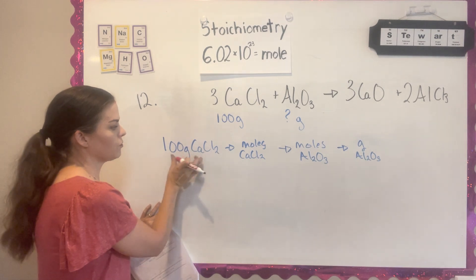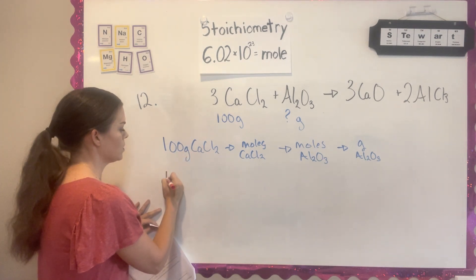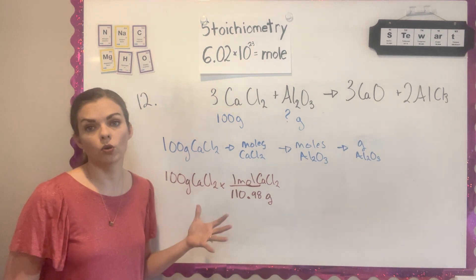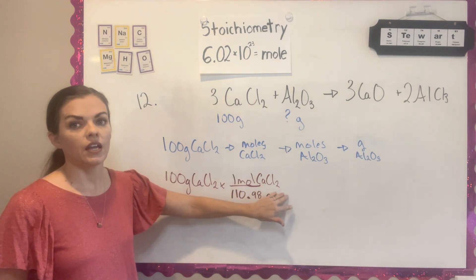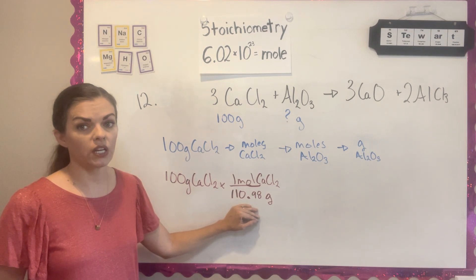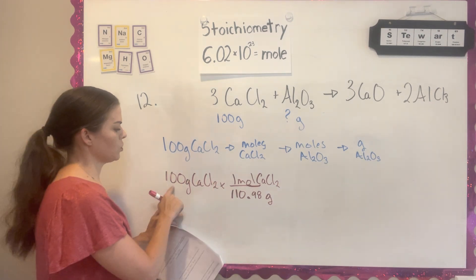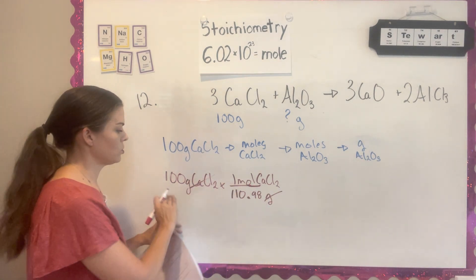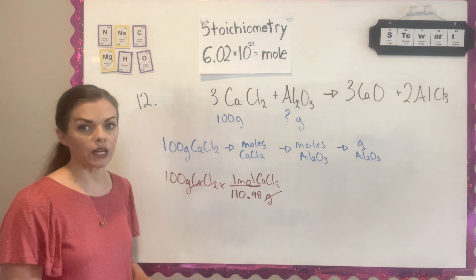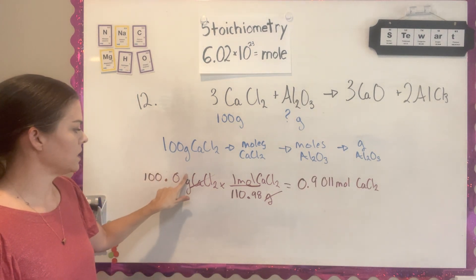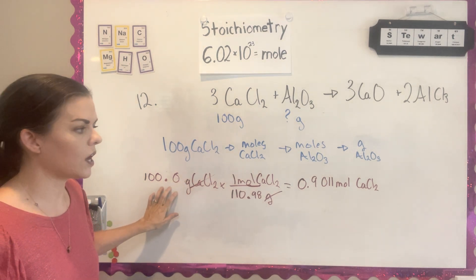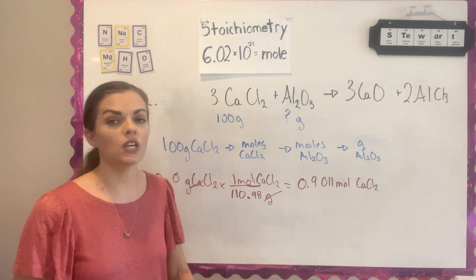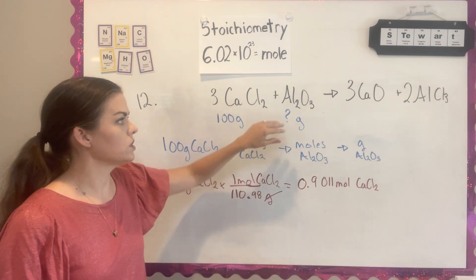The first step is going from grams to moles — if you don't know what to do, go to moles. To convert grams to moles of CaCl2, calculate the molar mass: one calcium plus two chlorines gives 110.98 g/mol. Putting grams of CaCl2 on the bottom, you calculate 100.0 ÷ 110.98. With four significant figures, you get 0.9011 moles of CaCl2.